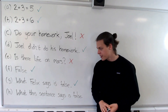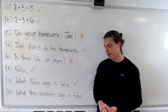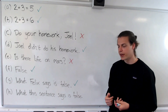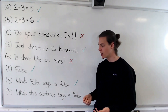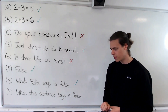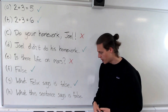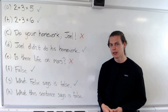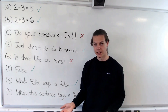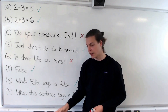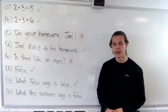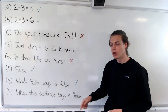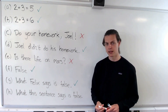And finally, H says: what this sentence says is false. Now at first glance, this might look like a statement. But remember, for it to be a statement, we must be able to assign it true or false. So suppose it's true — then what this sentence says is false, but we just said it's true. That's a contradiction. Whereas if we assign it to be false, then it is not the case that what this sentence says is false. Again, that's a contradiction. So in fact, we can't say that this is true or false. It's a paradox.